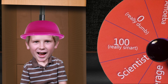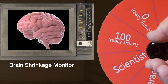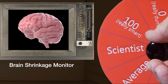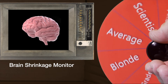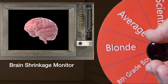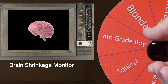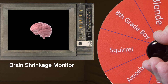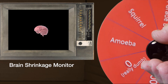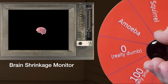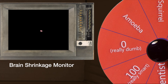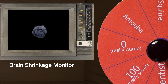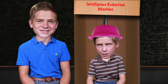We have a lot of settings here for different intelligence levels on the way to the lowest setting. We have blonde, there's a setting for eighth grade boy, just below that a squirrel, below that's an amoeba. Finally we reach the lowest setting: zero. Now we've removed all the intelligence from Chance, but we left Charles as smart as he ever was.